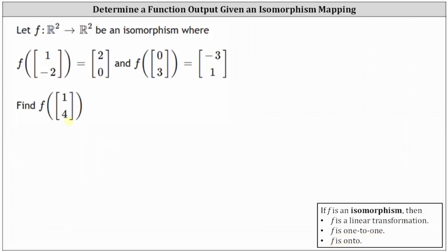To begin, we'll write the vector (1, 4) as a linear combination of the vectors that we know about, which are the vectors (1, -2) and (0, 3). So we'll begin with: the vector (1, 4) equals C₁ times the vector (1, -2), plus C₂ times the vector (0, 3).